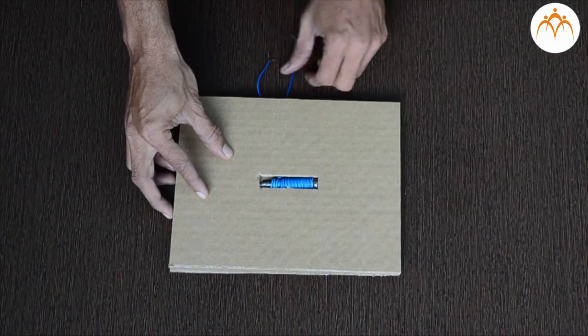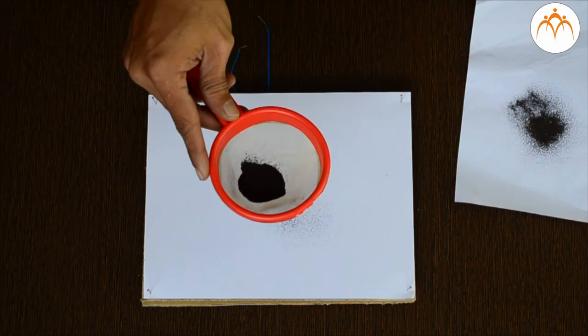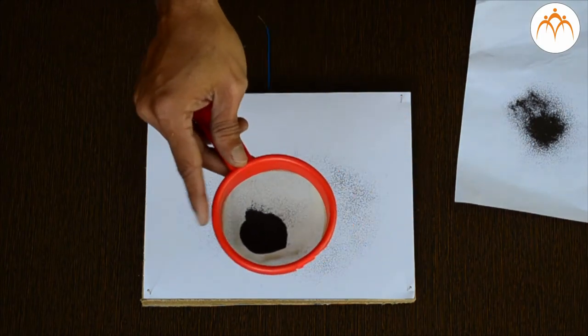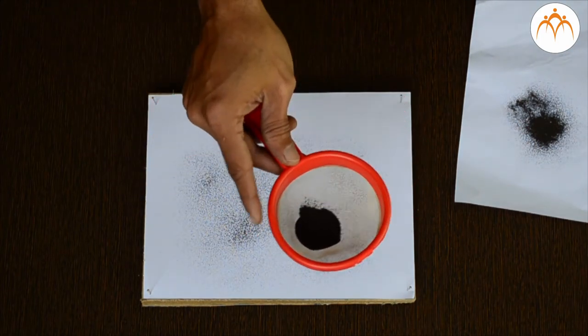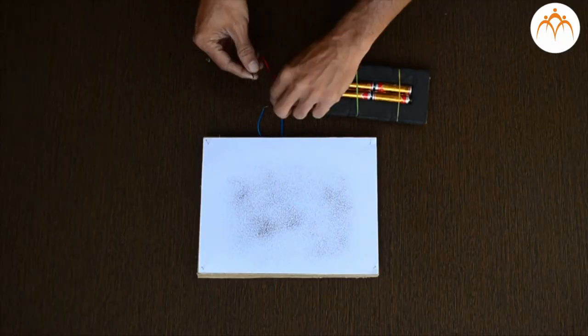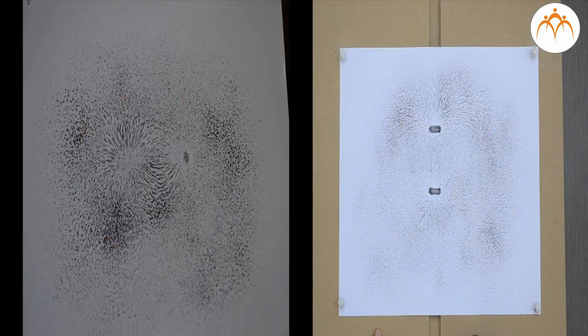When iron filings are sprinkled and the ends of an electromagnet are briefly connected to the battery, the filings will form a pattern typical of a magnetic field.